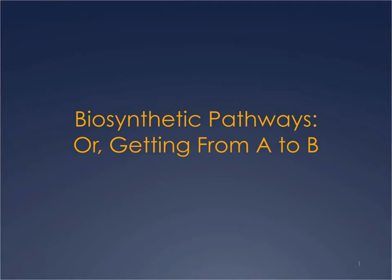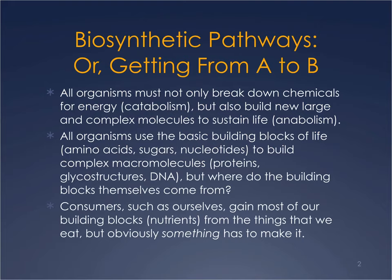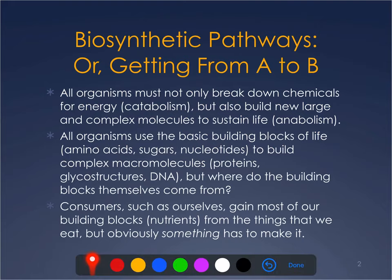Biosynthetic pathways — this is sort of the last part of metabolism I'm going to talk about, and it kind of leads into our discussion on genetics. I call this 'getting from A to B' because it's all about how you start with one thing and end with another. All organisms not only break down chemicals in catabolism, they also have to make chemicals in anabolism.